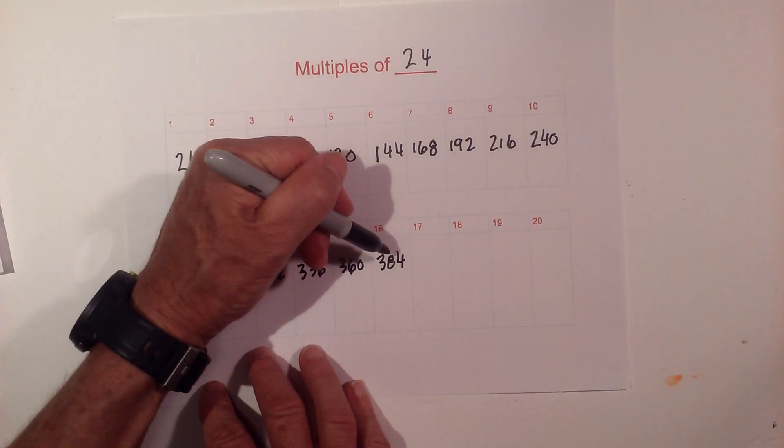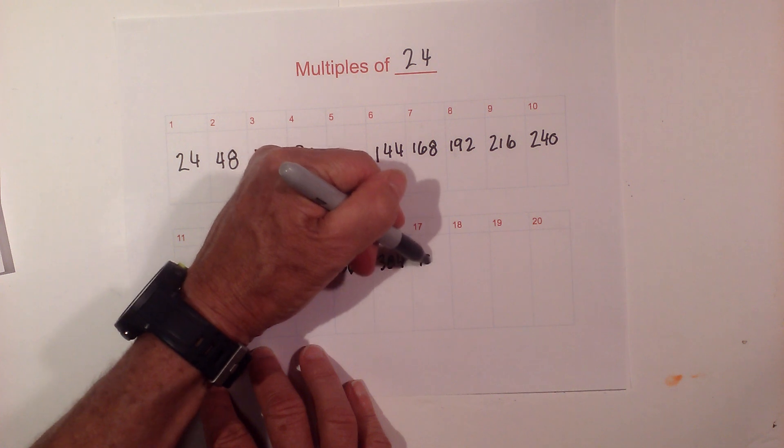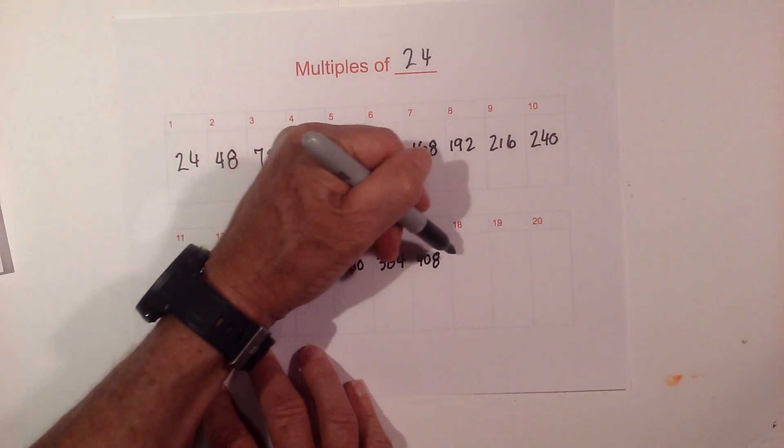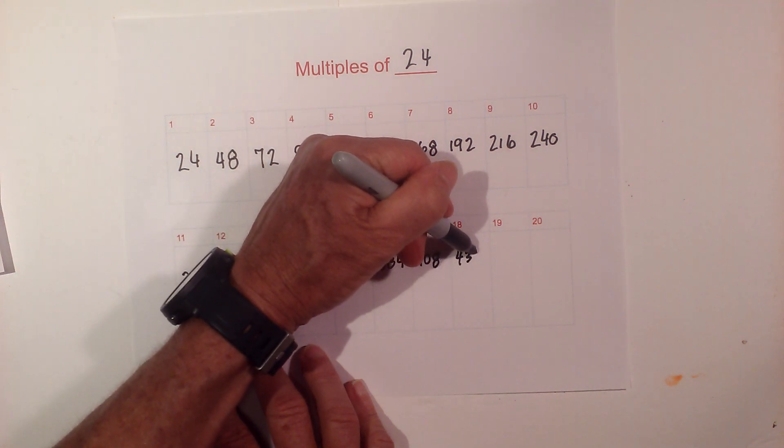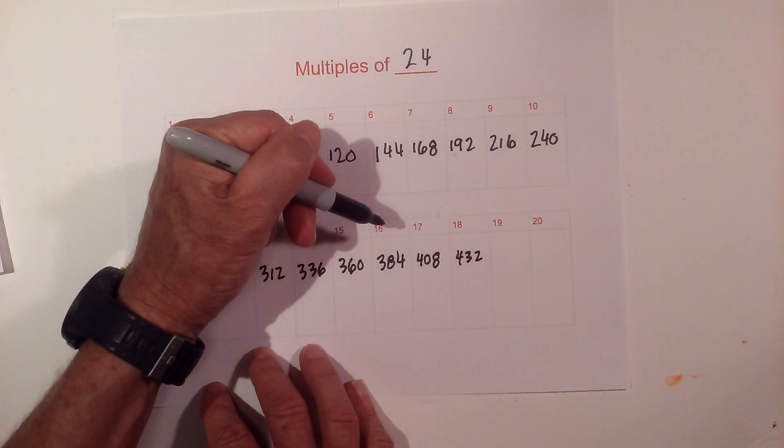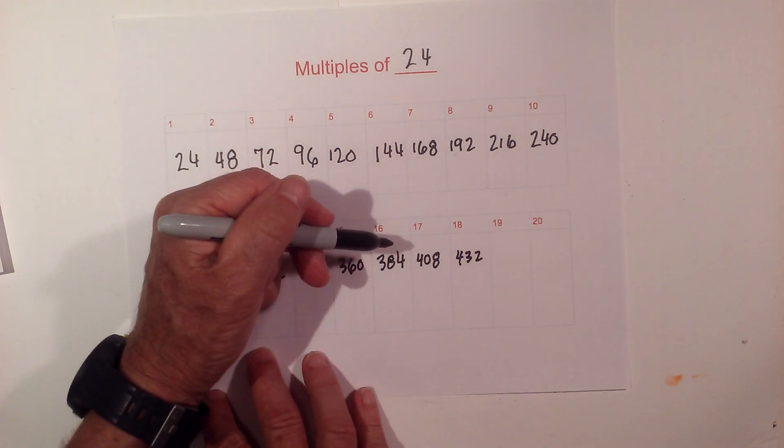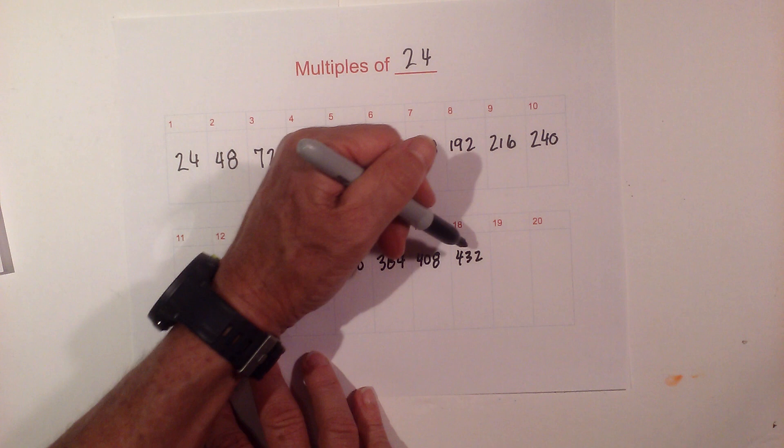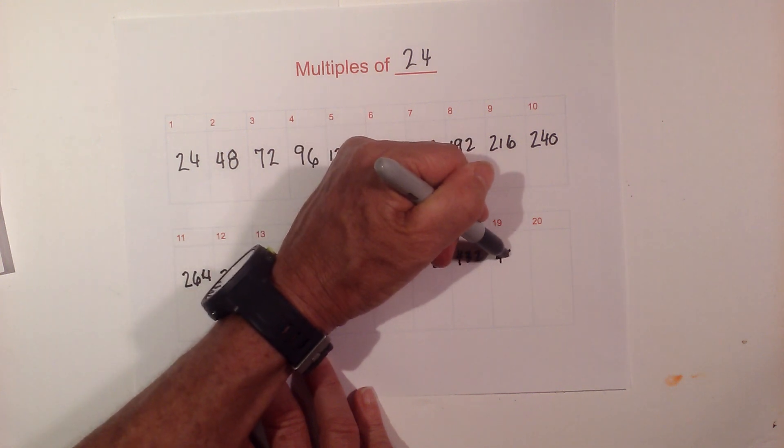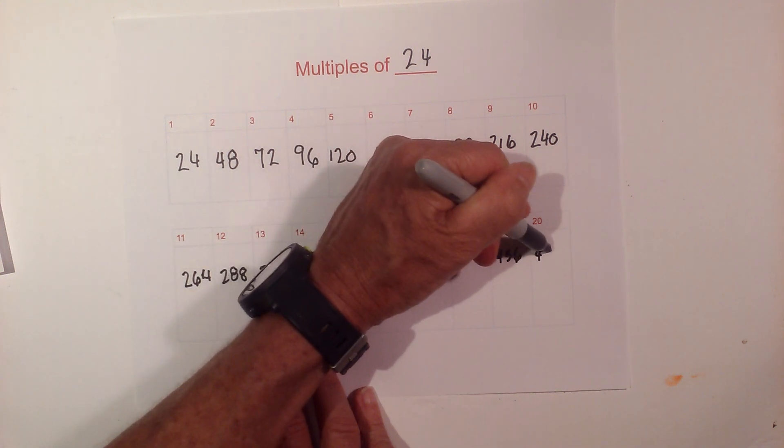384, 408, and we have 432. 24 times 19 is 456, and then 480.